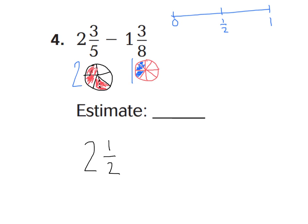Now let's look at one and three-eighths. I went ahead and shaded in three parts out of eight parts to show three-eighths. Here's my number line: zero, one-half, and one-whole. If I were to have this cut into eight parts, one-half is four-eighths. Three-eighths would be right about there. On this number line, three-eighths is closest to four-eighths, also known as one-half. So I would estimate this to be one-half, so I'm going to call this one and one-half.